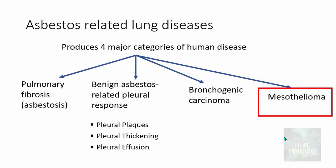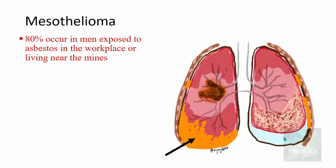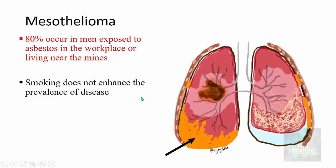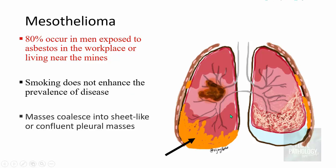The last category is malignant pleural involvement — mesothelioma. 80% of mesotheliomas occur in men exposed to asbestos, and unlike bronchogenic carcinoma, smoking does not enhance the risk. Mesothelioma presents as large masses that can coil to form a sheet-like configuration or a large pleural mass involving the entire pleura surrounding the lung. This is why mesothelioma can be so deadly. In 60% of cases, pleural effusion is also an accompanying feature.